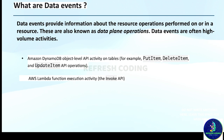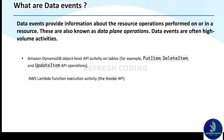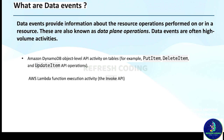AWS Lambda function execution activity also falls under data events. These are also known as data plane operations. Data events are often high-volume activities. One important thing to remember: data events are not enabled by default — you will have to turn them on manually if you want to use them.